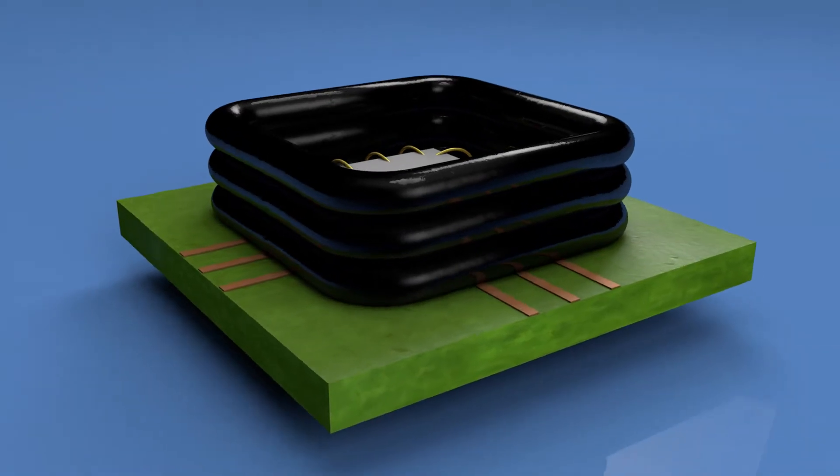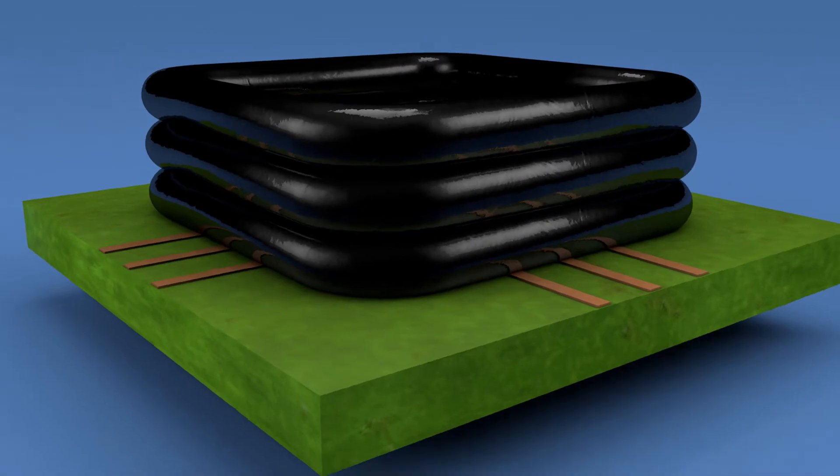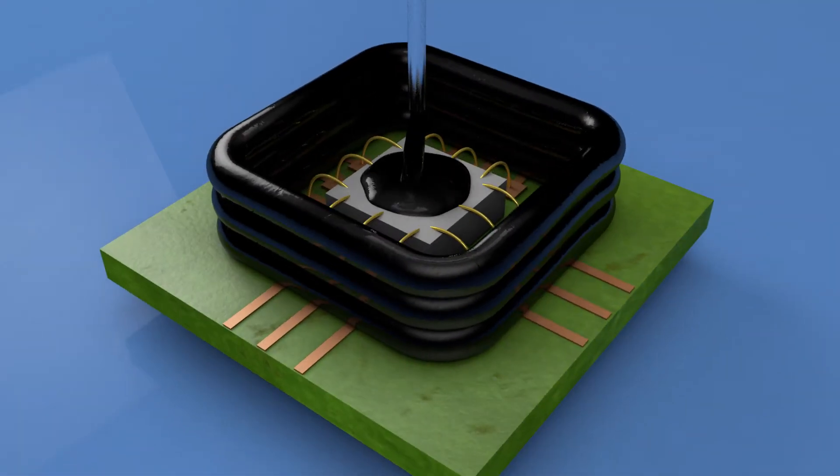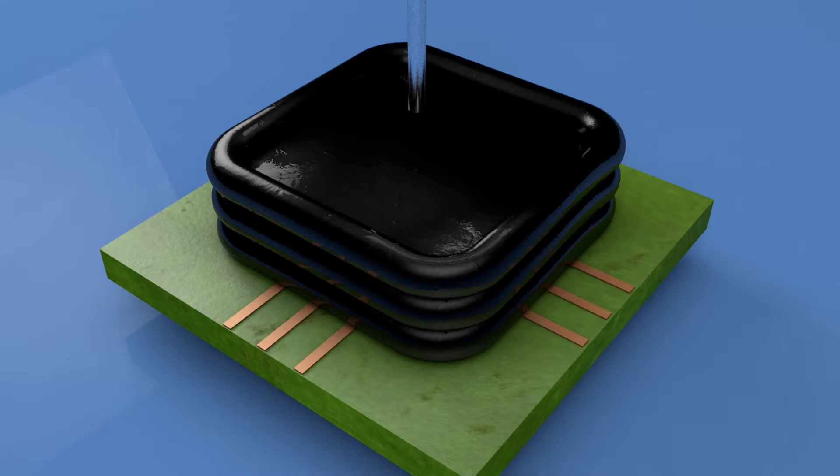This material will cure in place and will not run, in essence forming a dam. Then a flowable encapsulant is applied to cover the remaining area to be protected.